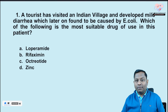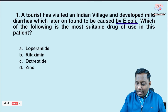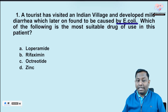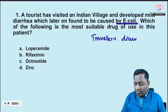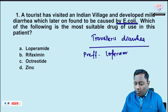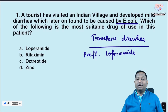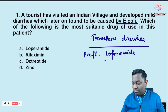A tourist has visited an Indian village and developed mild diarrhea, which was later found to be caused by E. coli. This is a case of traveler's diarrhea. For traveler's diarrhea, the most preferred agent is loperamide, one of the opioid-based agents.